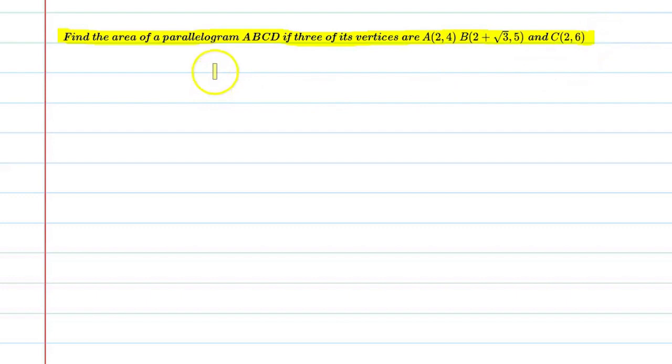So basically we have a parallelogram ABCD with three vertices given. Let's start this question. First we will write the given points. Point A is (2,4), second point B is (2 plus root 3, 5), and the third point C is (2,6). Alright, these are the points.